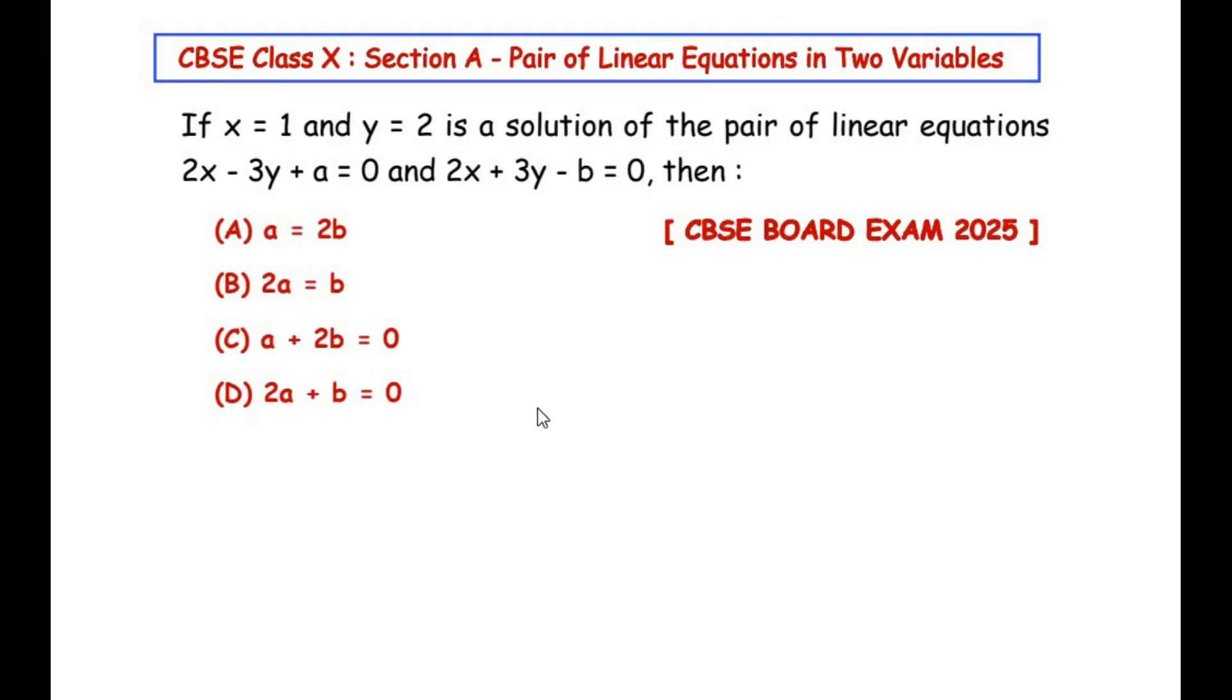Hello and welcome to my channel. In this video we are going to solve a multiple choice question from pair of linear equations in two variables chapter. If x = 1 and y = 2 is a solution of the pair of linear equations 2x - 3y + a = 0 and 2x + 3y - b = 0, then the relationship between a and b is: